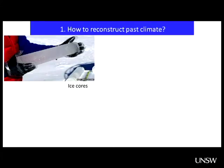The first thing is how to reconstruct past climates. We have different archives that we can use to try to understand what happened in the past. One of the first ones, and one that I really like, is ice cores. We'll look in a bit more detail later — ice cores are fantastic tools, and definitely one of the most used for glacial, interglacial, or millennial scale variability.